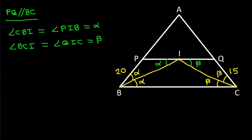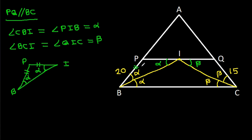Now, in triangle BPI, since angle PBI equals angle PIB (both alpha), these two angles are equal, so BP will be equal to PI. Therefore PI is also 20. And in triangle CQI, since angle QCI equals angle QIC (both beta), CQ will be equal to QI, so QI will be 15.